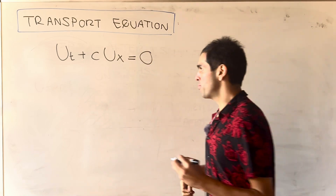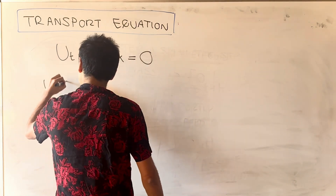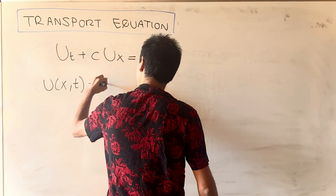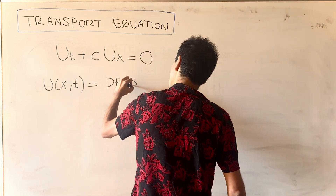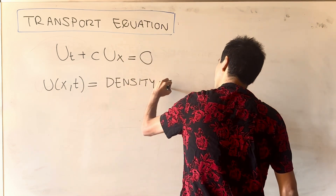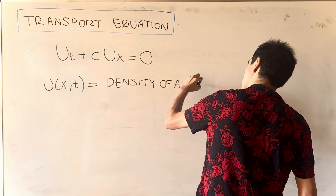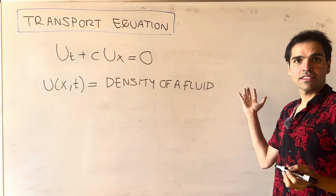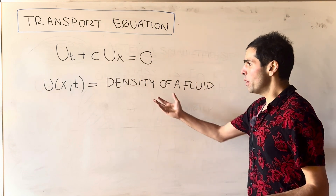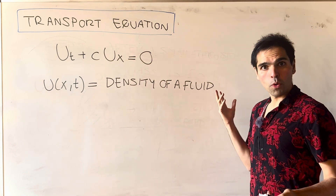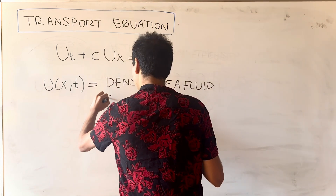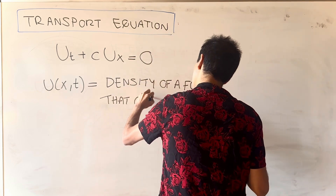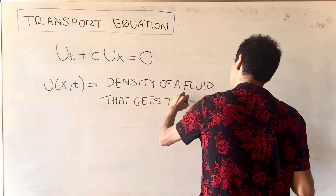And what it represents: u of x,t is the density of a fluid at position x and time t, but that gets transported to the right.